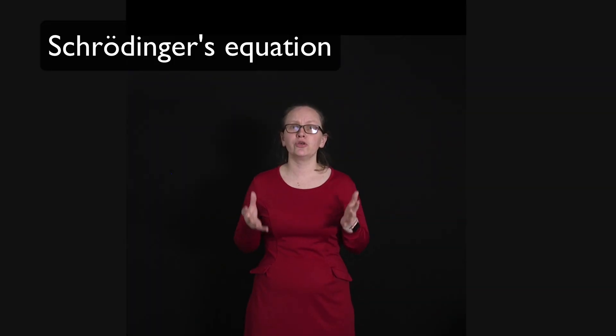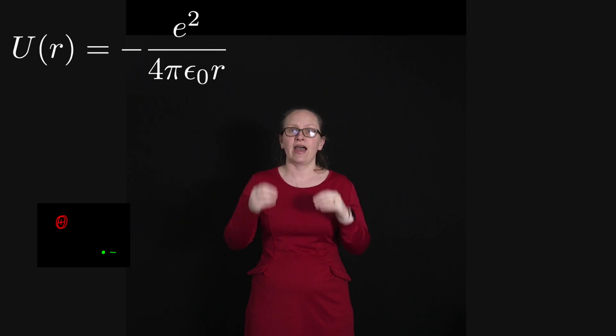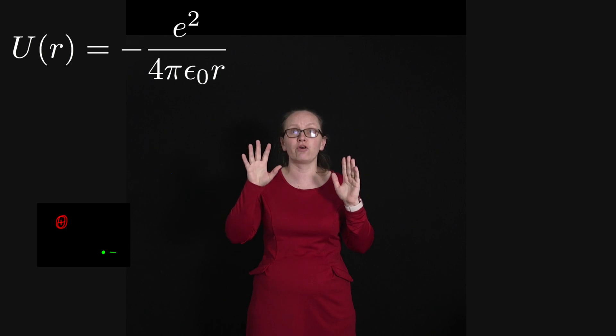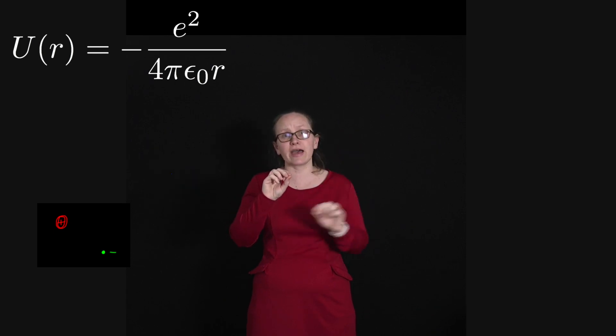Now we can actually apply Schrödinger's equation to a hydrogen atom. A hydrogen atom essentially consists of a proton which is a positive charge creating an electric potential. We can write the electric potential energy as U(r) equals minus e squared over 4π epsilon naught r, and around that potential, that proton, we have an electron.